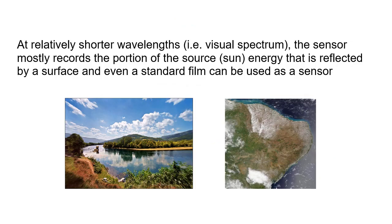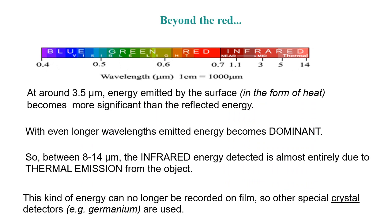At relatively shorter wavelengths, such as the visible spectrum, the sensor mostly records the portion of solar energy reflected by the surface of the Earth. But around 3.5 micrometers and beyond, at larger wavelengths, the dominant energy is that emitted by the surface itself. This emitted energy cannot be detected by normal sensors — it requires special detectors.